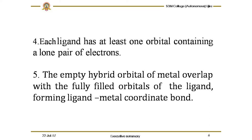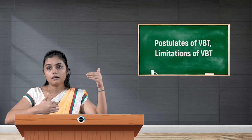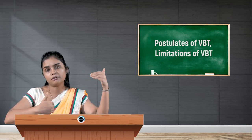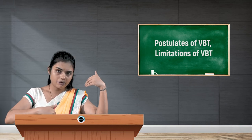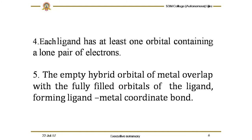The last postulate states that the empty hybrid orbital of the metal overlaps with the fully filled orbital of the ligand, forming a ligand-to-metal coordinate bond. The empty hybrid orbital is a basic requirement for forming a coordinate bond, because in this interaction the metal ion does not donate the pair of electrons — it is the ligand that donates a lone pair to the central metal ion. However, there can also be back-donation through pi bonding from the metal ion to the ligand.